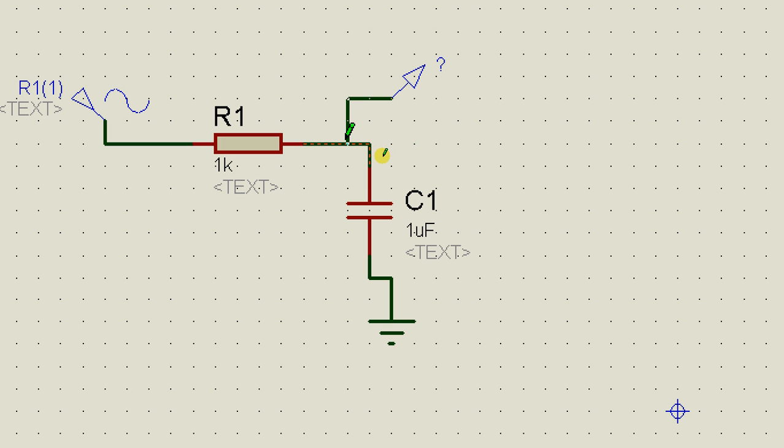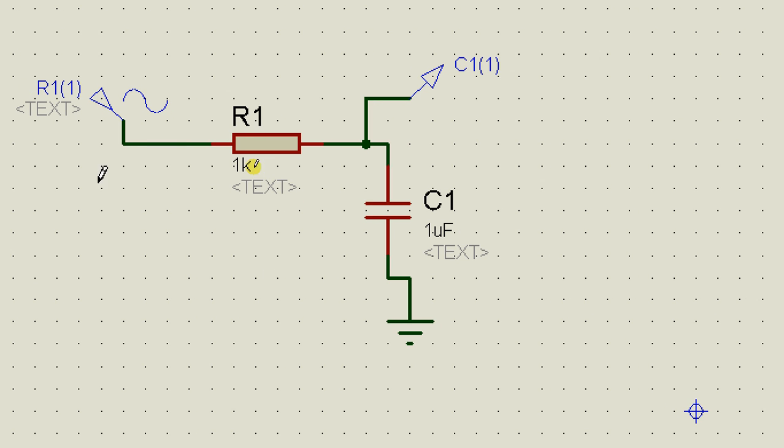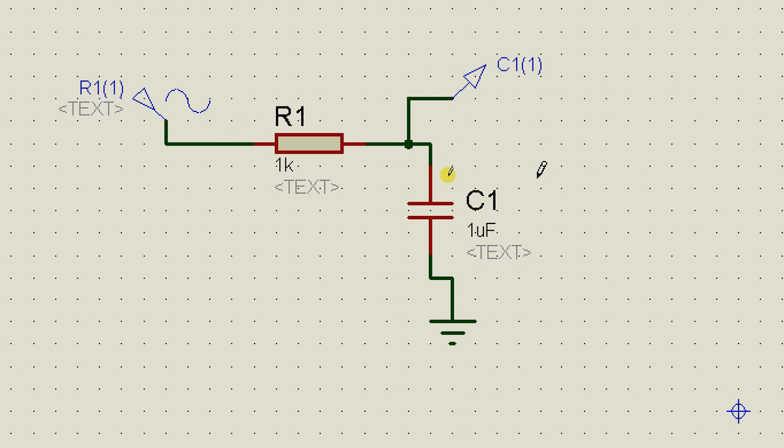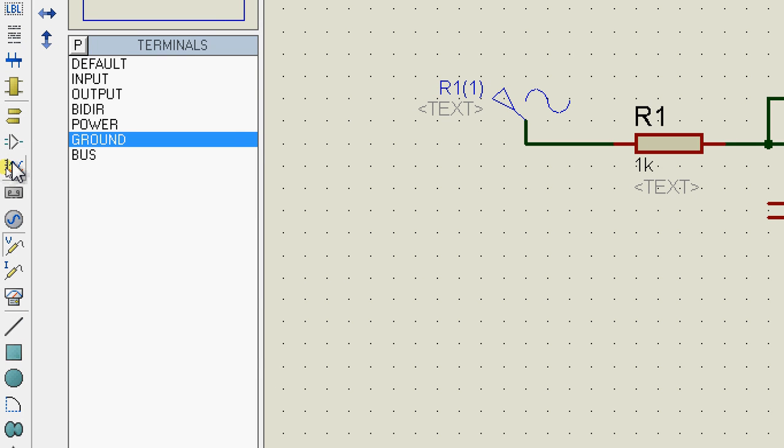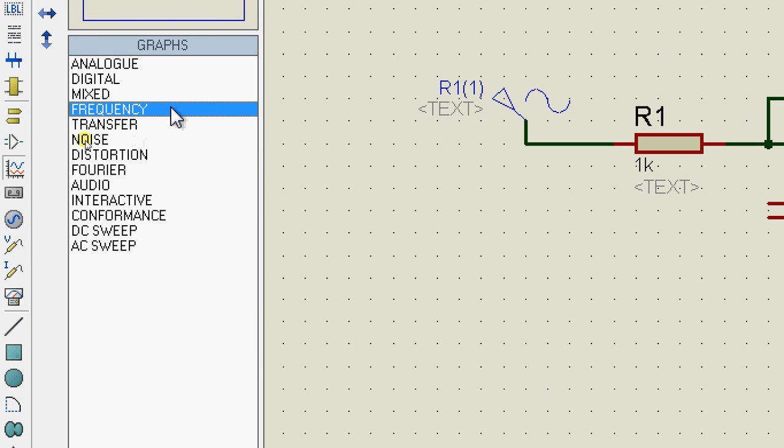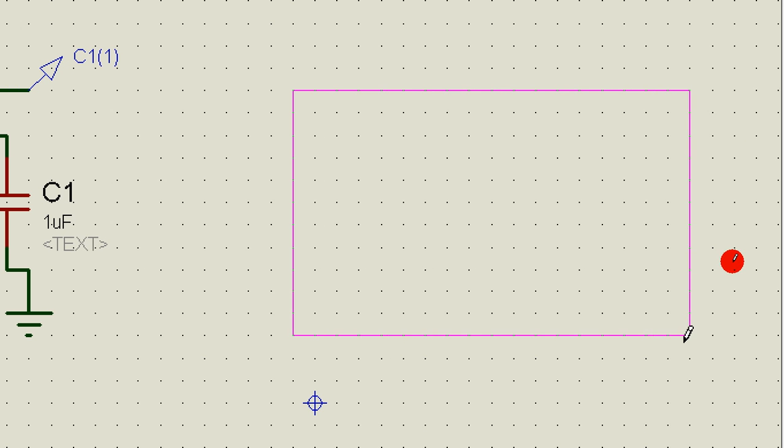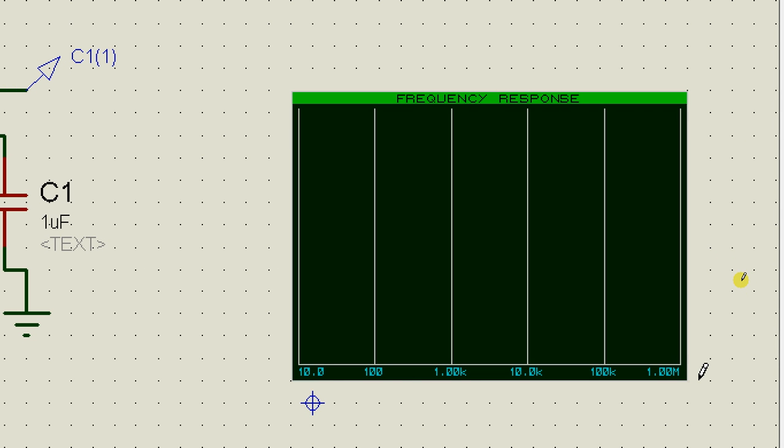So click on this little icon over here with a V and add it on the output side of the circuit. And there you have it, our circuit's ready. Now in order to analyze filter circuits we need something called the frequency analysis.